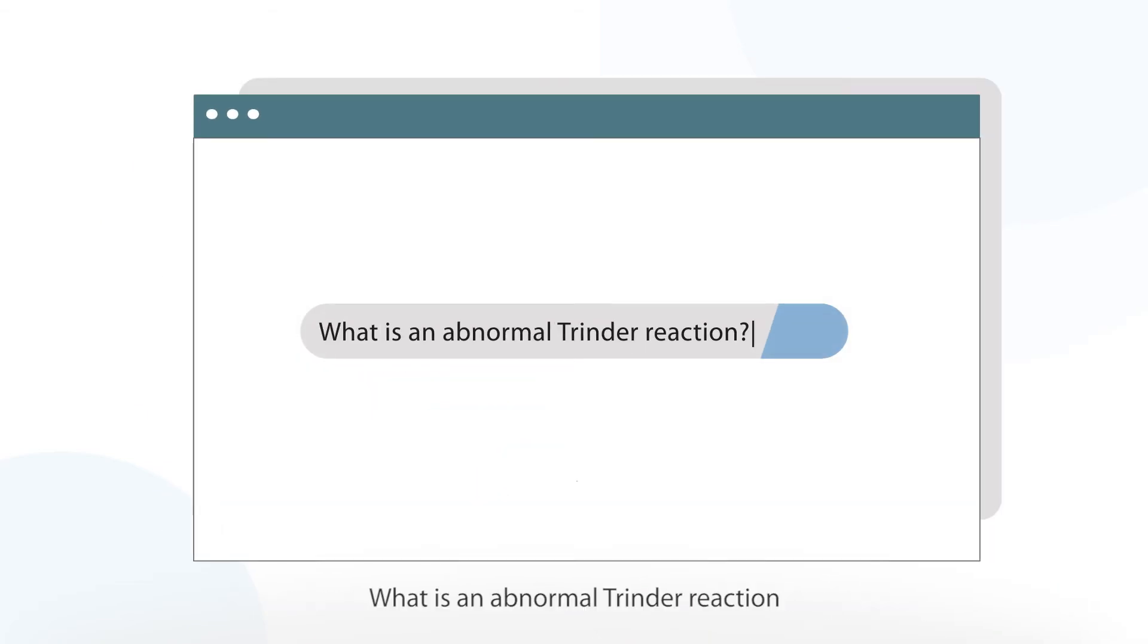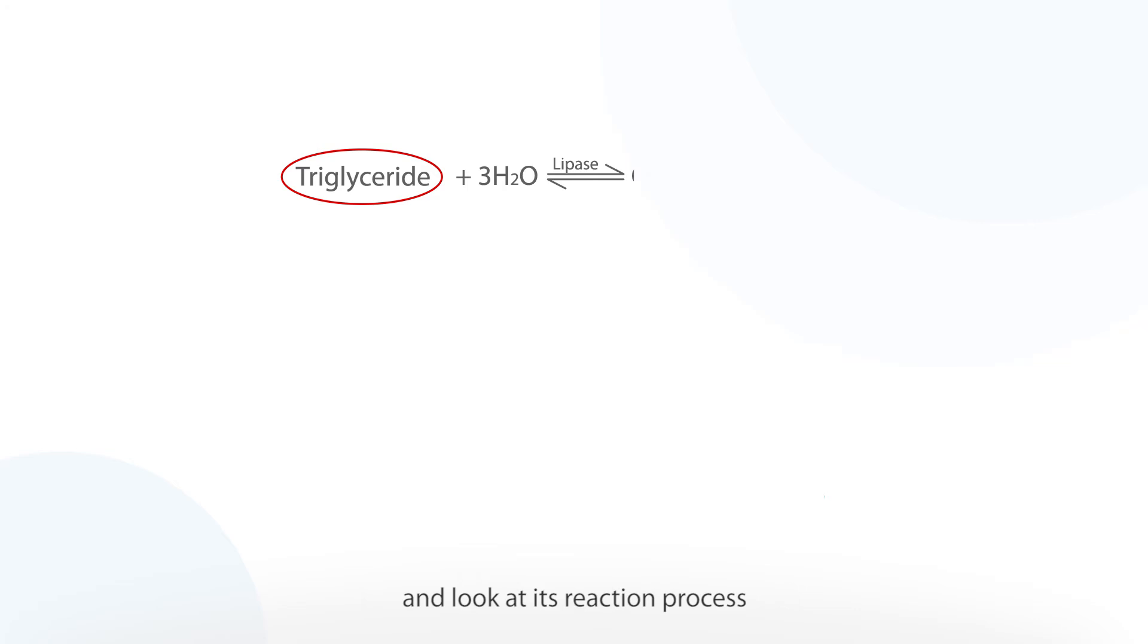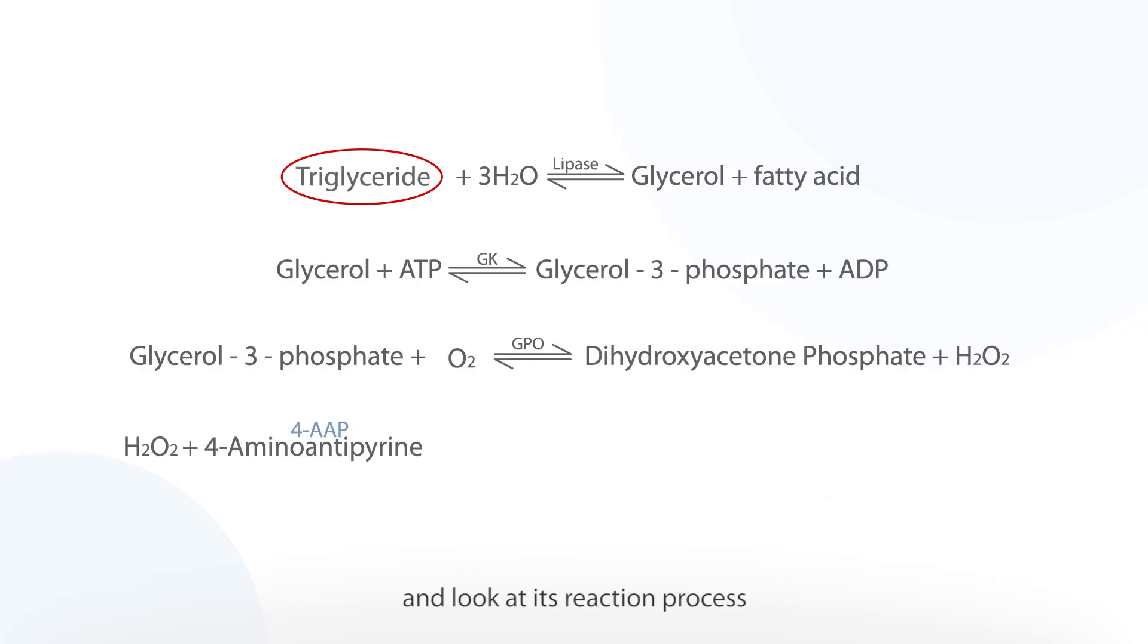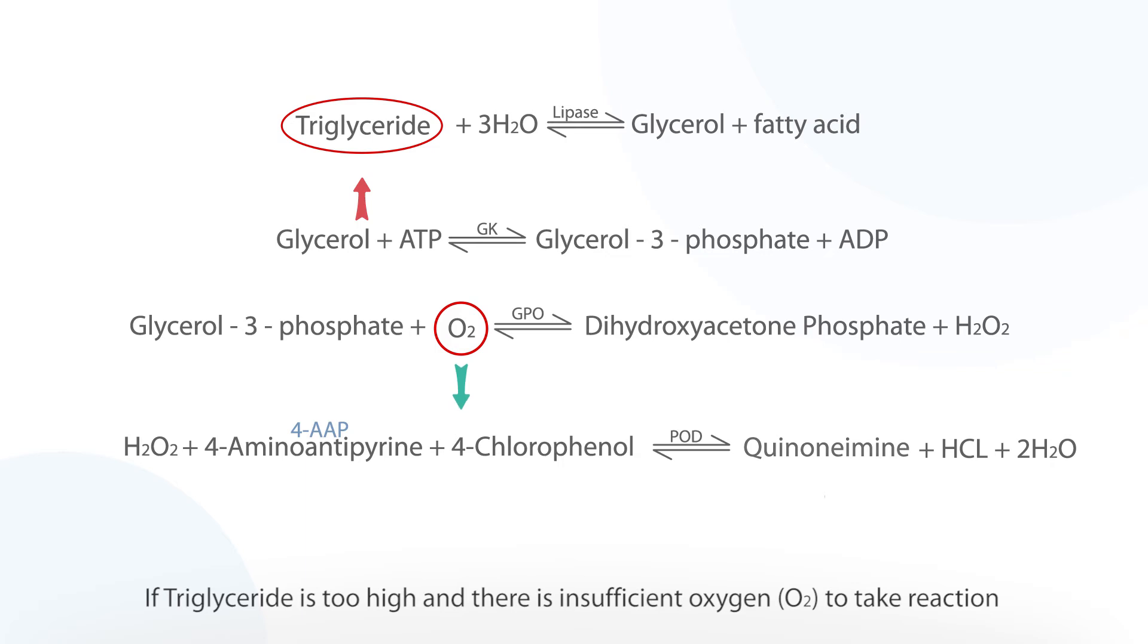What is an abnormal trender reaction? Let's take triglyceride as an example and look at its reaction process. If triglyceride is too high and there is insufficient oxygen to take reaction, the final product quinine amine will first increase and then decrease.